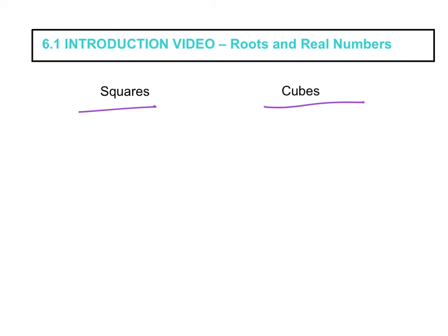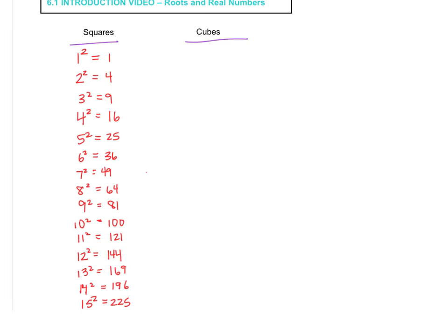We're talking about squaring all of our whole numbers, all of our positive integers. So 1 squared is equal to 1, 2 squared is 2 times 2, which is 4, 3 squared is 9, and we're going to continue this list all the way up to 15 squared. I went ahead and wrote those in, so make sure you get those in your notes.